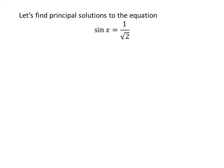Let us first find the principal solutions to the equation sine of x is equal to 1 upon square root of 2. We know the solutions to the trigonometric equation for which x is greater than or equal to 0 and less than 2 times pi are the principal solutions.